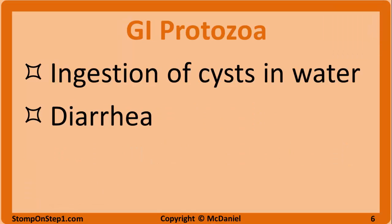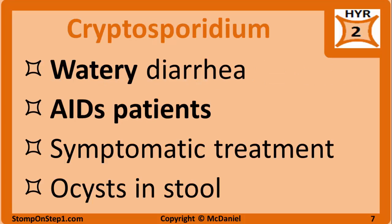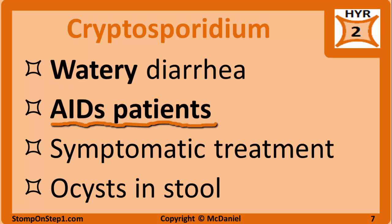The gastrointestinal protozoa include Cryptosporidium, Giardia lamblia, and Entamoeba histolytica. All three are primarily spread via ingestion of cysts in contaminated water — fecal-oral transmission — and all three present with diarrhea. Cryptosporidium presents as watery diarrhea primarily in AIDS patients. Only symptomatic treatment is needed, and oocysts may be found in the stool on acid-fast stain.